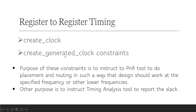The purpose of these two constraints — create clock and create generated clock — is to instruct the PNR tool to do placement and routing such that the design should work at the specified frequency or other lower frequencies. Basically, in these two constraints we specify the maximum frequency of operation. When we look at the syntax, we don't specify the frequency directly but we specify the period of the clock, which are equivalent.